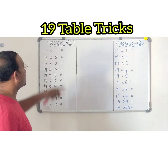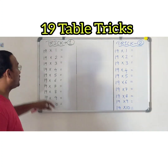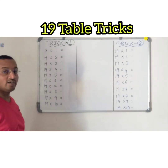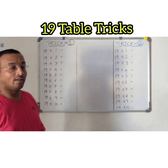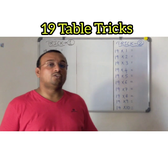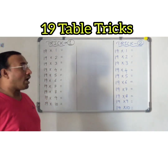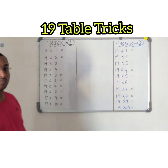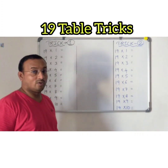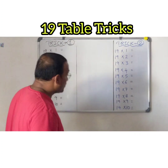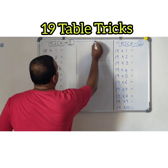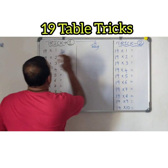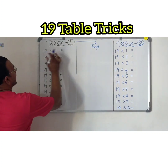Let us take the first trick. In the first trick, I am going to take 19. What are the digits in 19? 1 and 9. So I am going to write the 1 and 9 tables, and from those 2 tables I am going to complete my 19 table. Let's see how it works.